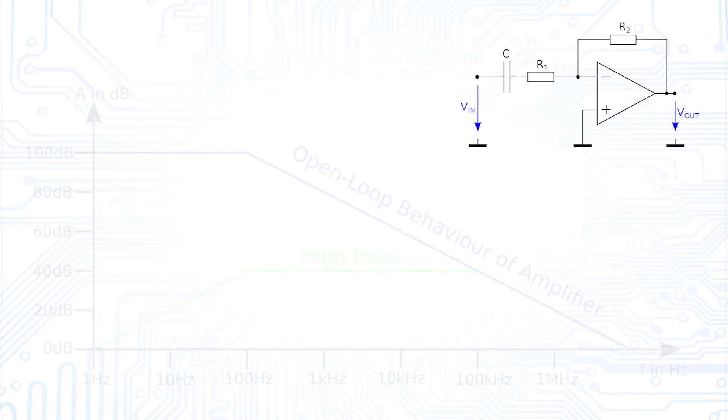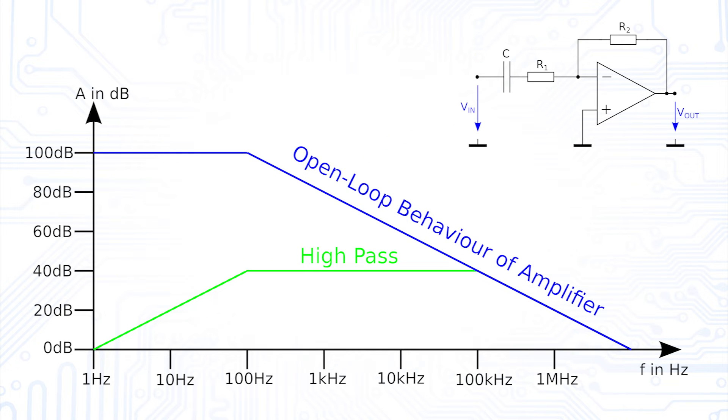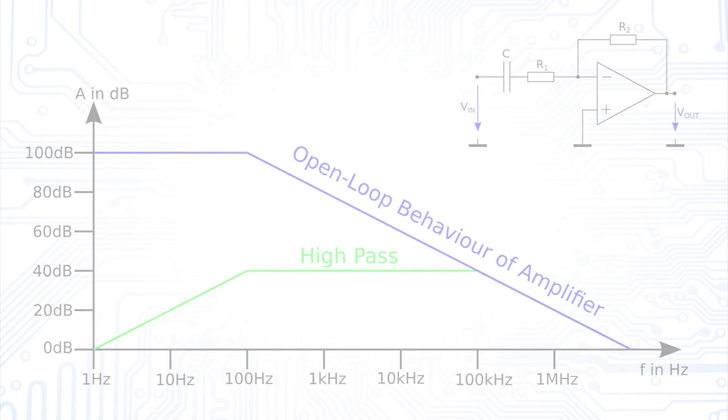However, since operational amplifiers have a low-pass behavior, the high-pass behavior of our circuit will conflict at very high frequencies and our active high-pass filter will no longer work as expected. So always make sure that the highest frequency of the input signal does not exceed the bandwidth of the operational amplifier.